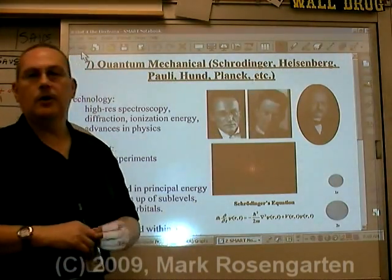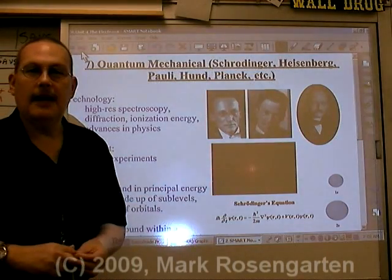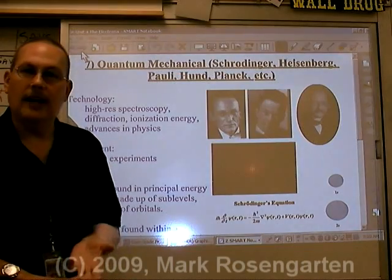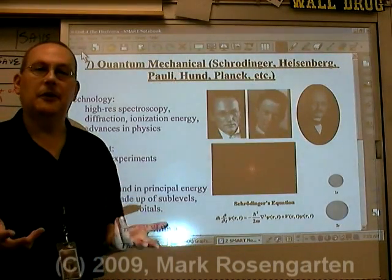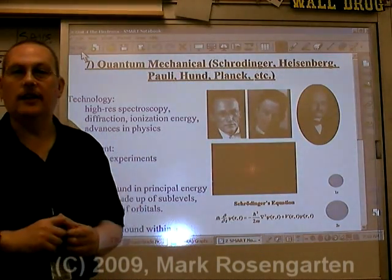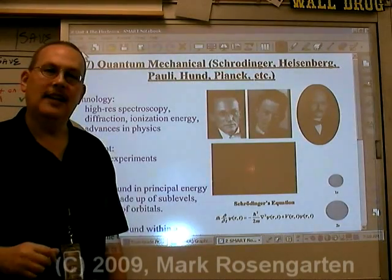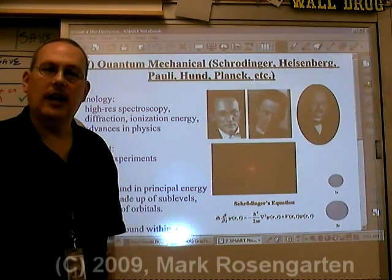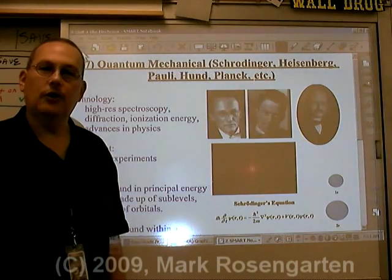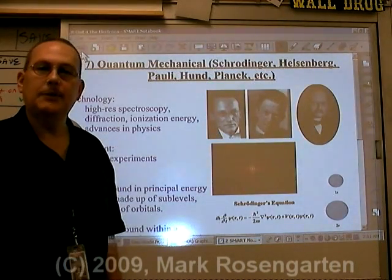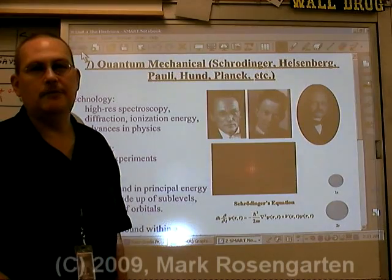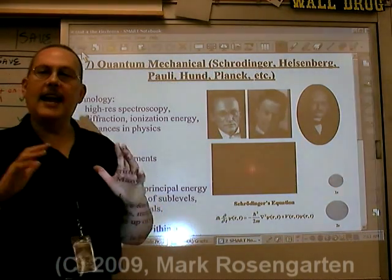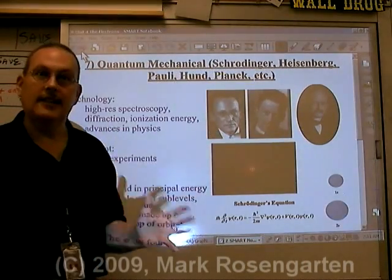Then along came Werner Heisenberg, who said that you can't know both where an electron is and where it's going at the same time, because any effort to determine one is going to change it. If you want to find out where an electron is, just trying to find out is going to change its location. And if you want to find out what direction it's going, any attempt to probe it will change its direction of motion. So the Heisenberg uncertainty principle says that you can't actually describe where an electron is in an atom.